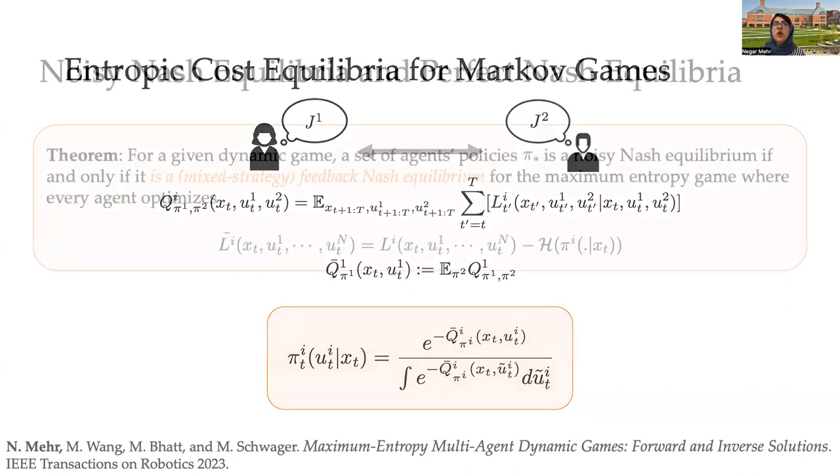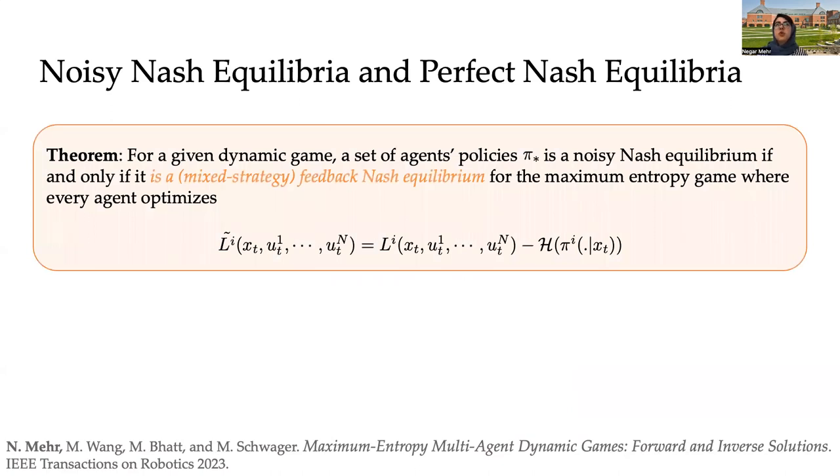We showed that for a given game, these entropic cost equilibria are in fact the feedback Nash equilibria of an auxiliary game in which every agent is not only minimizing its own cost, but also the agent is trying to maximize the entropy of its policy.